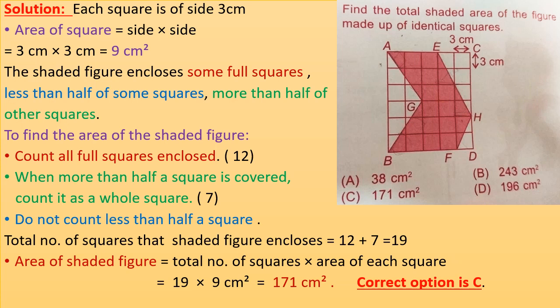The shaded figure encloses some full squares, less than half of some squares, and more than half of other squares. To find the area of the shaded figure, first count all full squares enclosed, which are 12 in this figure. When more than half a square is covered, count it as a whole square — there are 7 such squares. Do not count squares that are less than half covered.